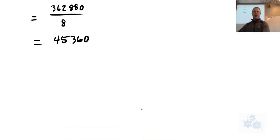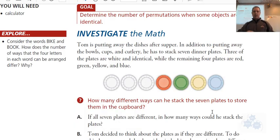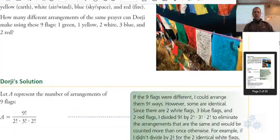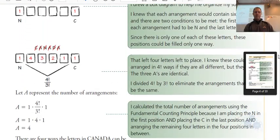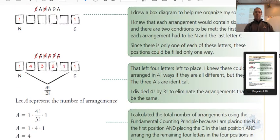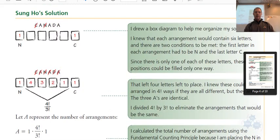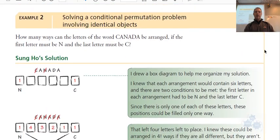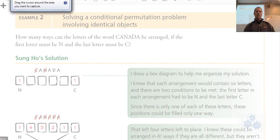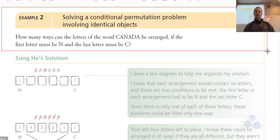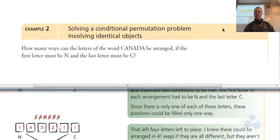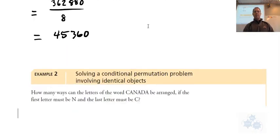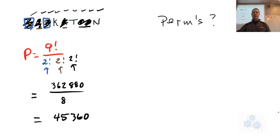So I'm going to do an example with you from the textbook here now. Let's take a look at this one. So in this example two here, solving a conditional permutation problem with identical objects, this is very similar to the conditional problems that we've been working with in the previous sections. But what we'll do is we'll take a look at how that changes slightly with repeats. How many ways can the letters of the word Canada be arranged if the first letter must be an N and the last letter must be a C?